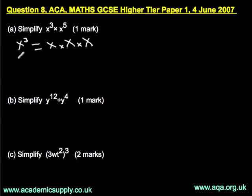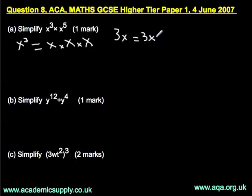Now, x to the power of 3 is not the same as 3x, which you can sometimes see. That's not to the power. That is 3x, which equals x plus x plus x. And that's a plus sign there, not the multiply sign that we have here.